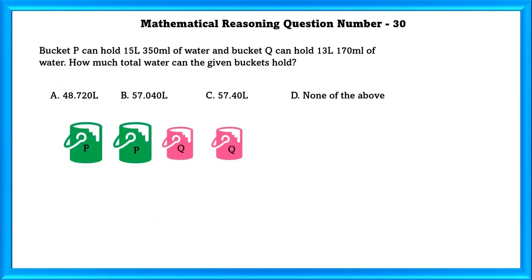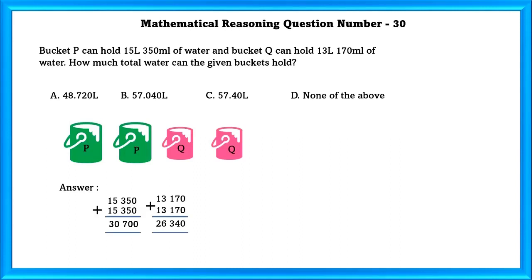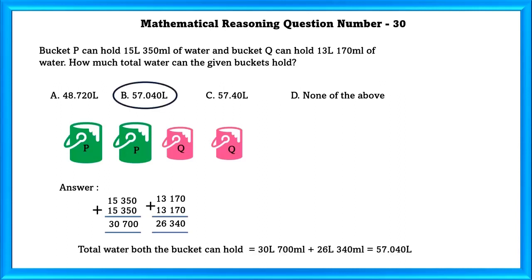Question No. 30: Bucket P can hold 15 liters 350 ml of water and bucket Q can hold 13 liters 170 ml of water. How much total water can the buckets hold? Since P appears 2 times, we add its quantity twice to get 30,700 ml. Similarly for Q, the total is 26,340 ml. Combined, both buckets can hold 57.040 liters, which is option B.